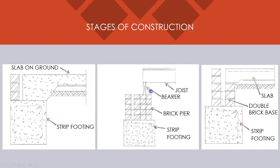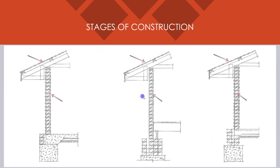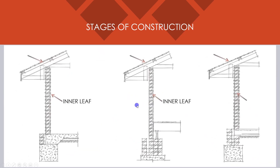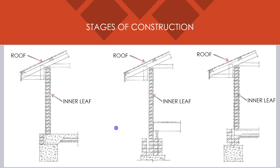Following that, the floor is laid and the inner leaf of the double wall is built with the windows and exterior doors built in. The internal partitions are constructed and the roof is erected. The internal linings are attached, all interior doors fitted, and finishing work carried out. At the same time, the outer brick leaf can be built.